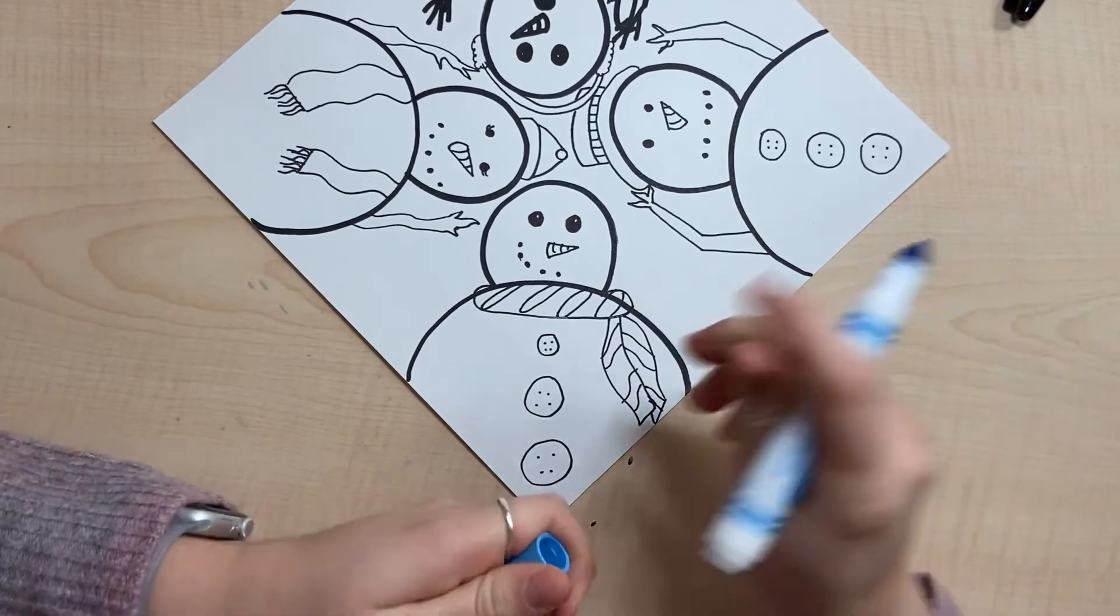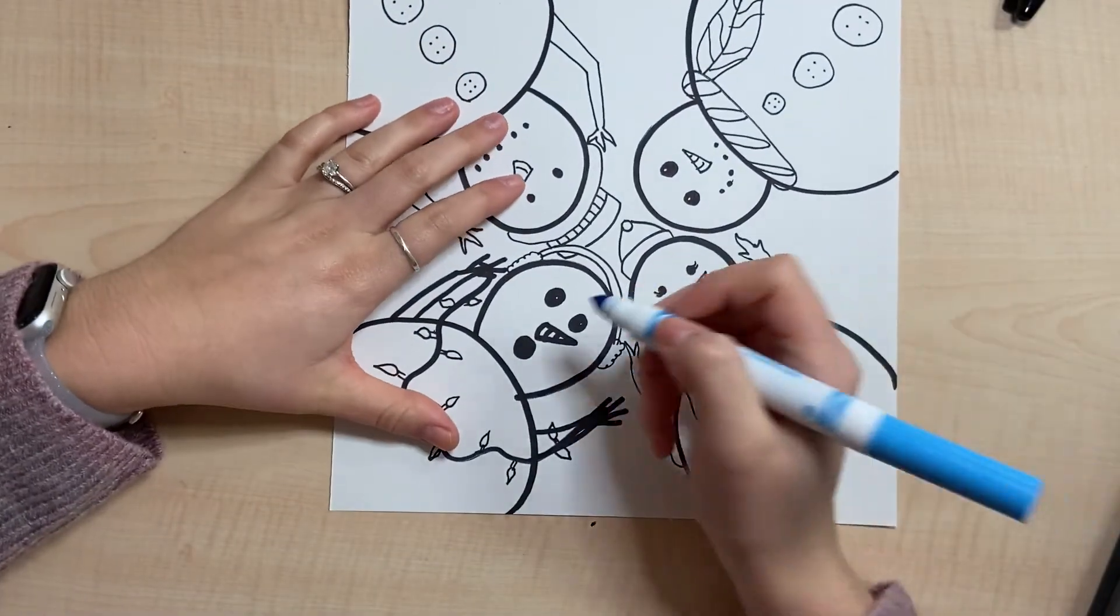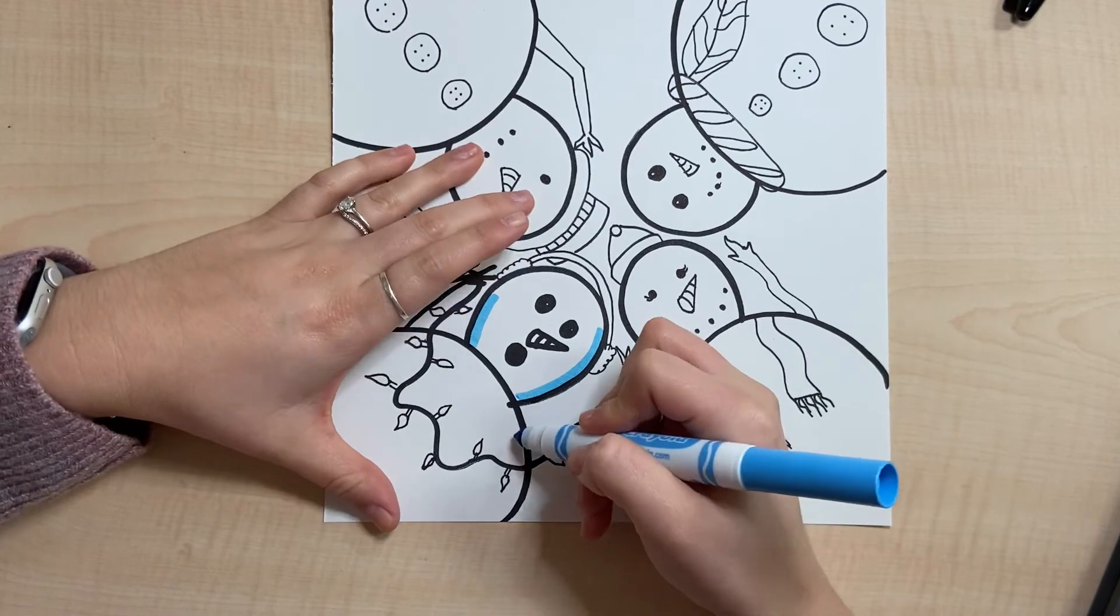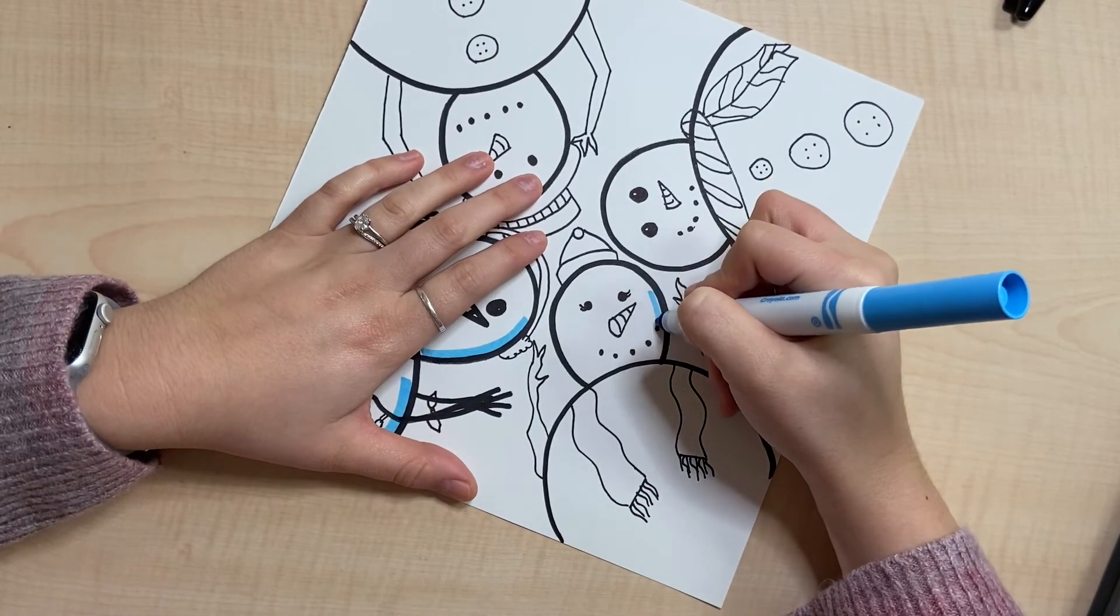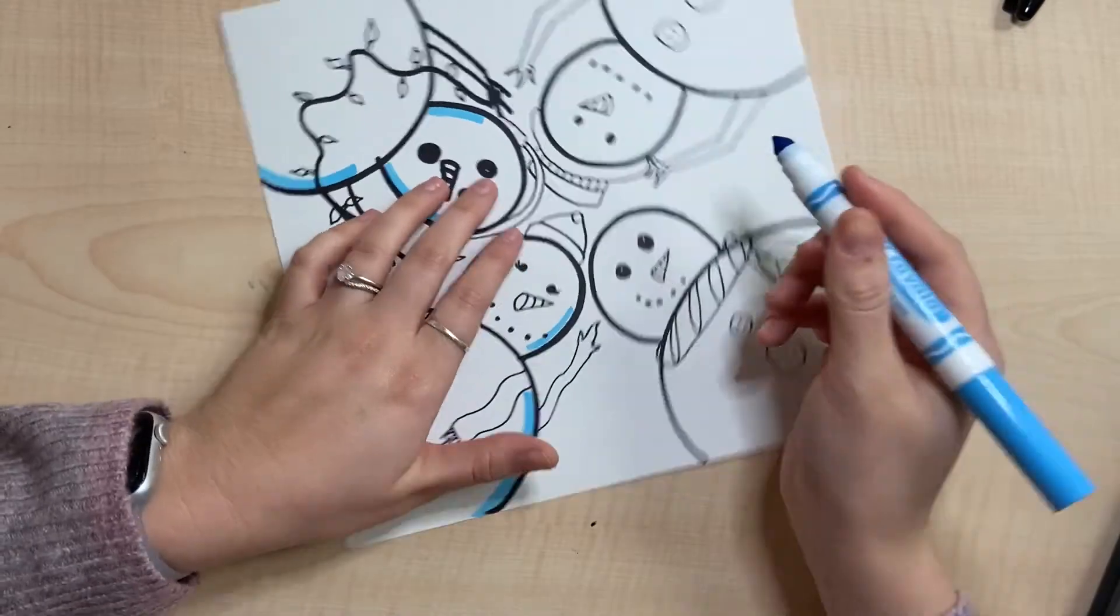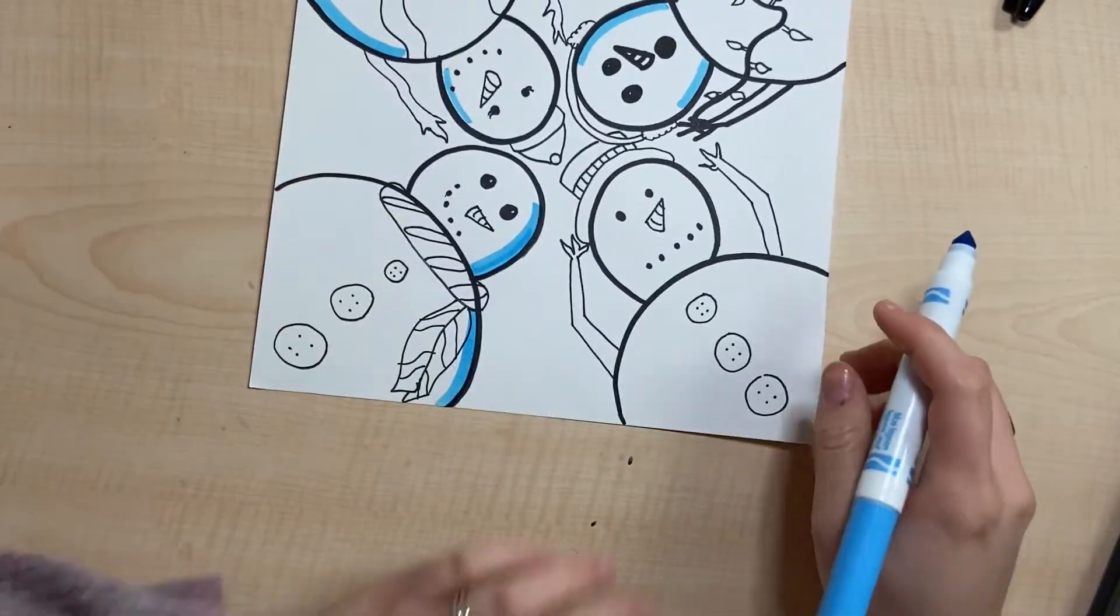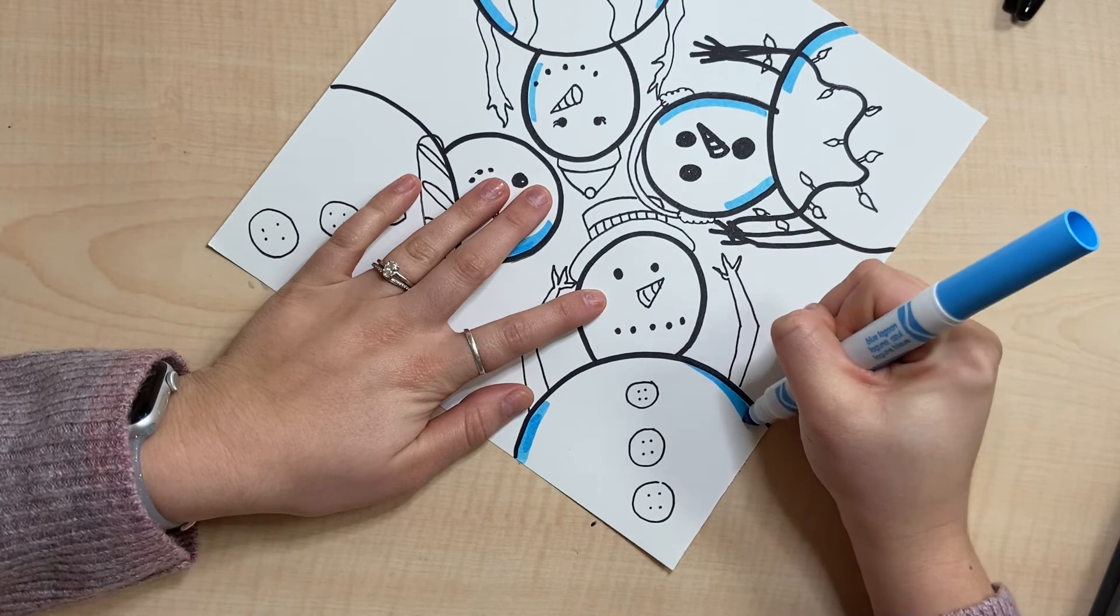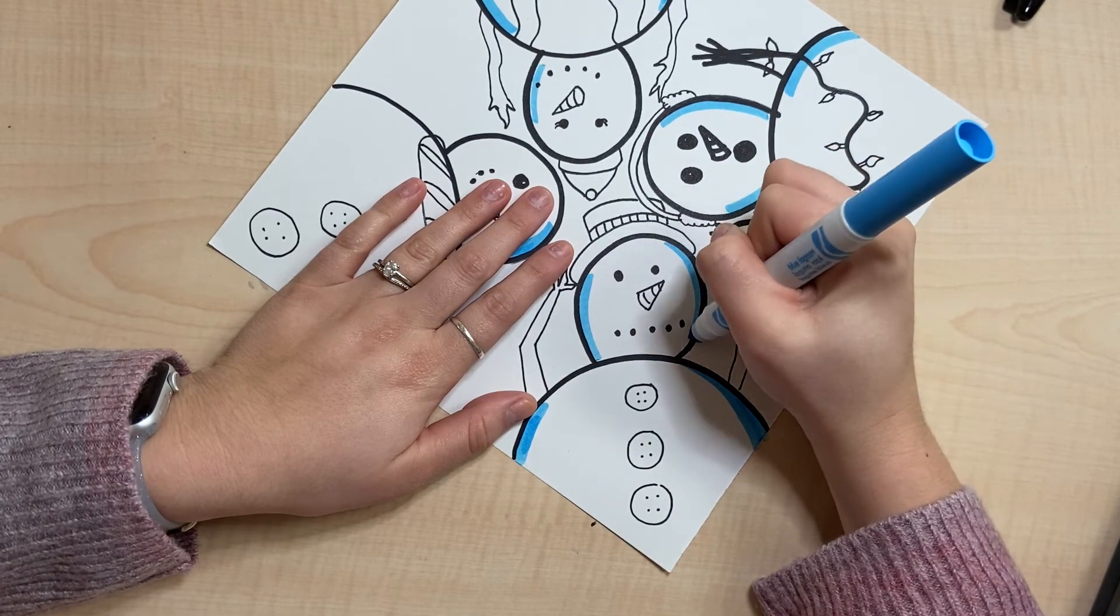I'm gonna use a light blue marker. You could use a light blue crayon or whatever you have. We're going to just add some shadows right here on the edge of our snowman. It's really gonna give you that full effect of your snowman looking down from that bird's eye angle. So you don't do the whole thing, just parts of it.